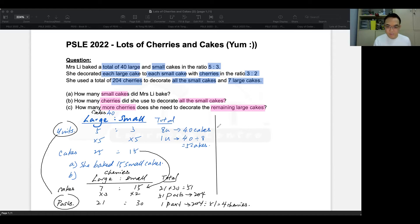So I'm going to answer that part now. Let's be neat. To answer B, it will be 15 small cakes uses 30 parts of cherries. So 30 parts would be 30 times four, giving me 120 cherries. So now I've completed part B of the question. And now we go to the last part, part C.